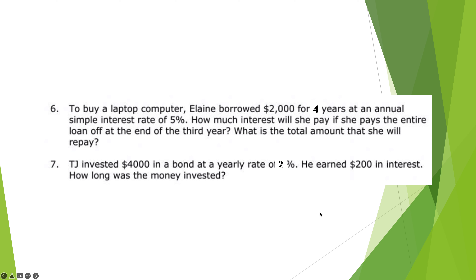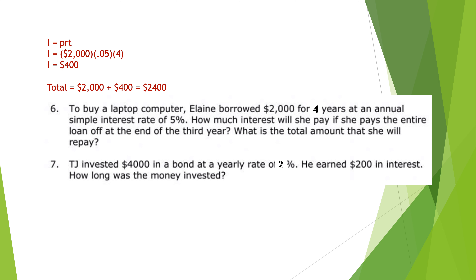Simple interest: I = P × r × t. In the first problem, it's $2,000 × 0.05 × 4 years = $400 in interest. The total amount she will repay is what she borrowed plus the interest: $2,000 + $400 = $2,400.